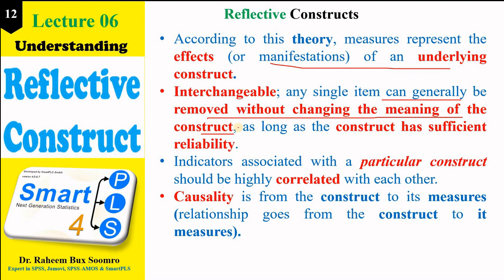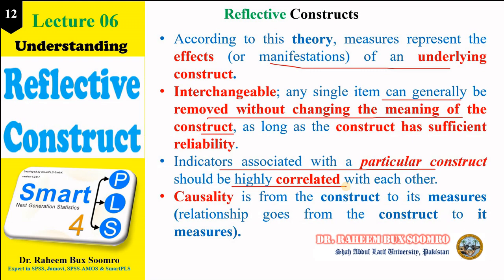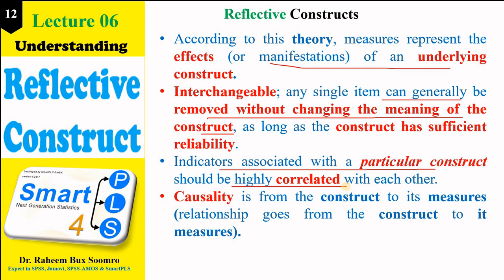For example, in order to achieve reliability and validity of each construct, you may be required to remove an item — and it will not negatively affect or change the overall meaning of your construct. Indicators associated with a particular construct should all be highly correlated with each other, as already mentioned — the correlation among all items in a reflective construct should be high.